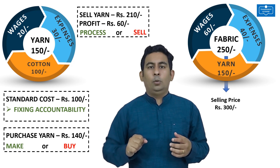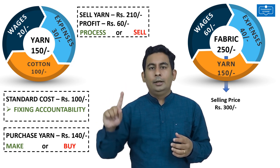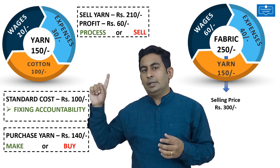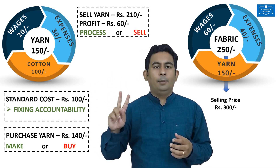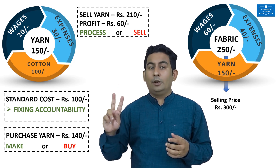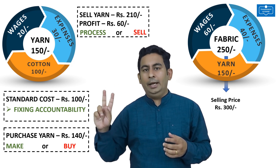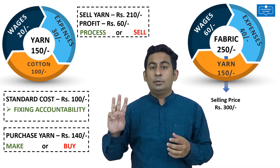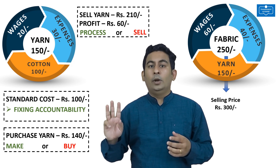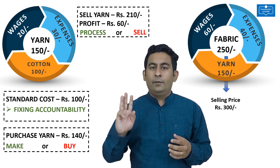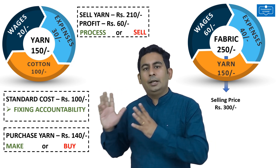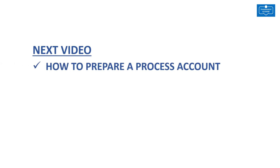To summarize all three advantages: advantage number one, it helps in fixing accountability; advantage number two, it helps in taking the make or buy decision; advantage number three, it helps in deciding whether to process further or to sell it as it is. I hope you understood process costing. In our next video, we will be discussing how to prepare a process account.